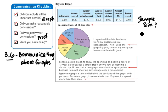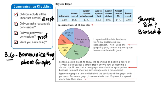She only asked 10 students from her class, so is that representative of all 13-year-olds? Perhaps she went to a more affluent school, or her friends might all be very similar in terms of family dynamic. So we're asking: is the sample biased?